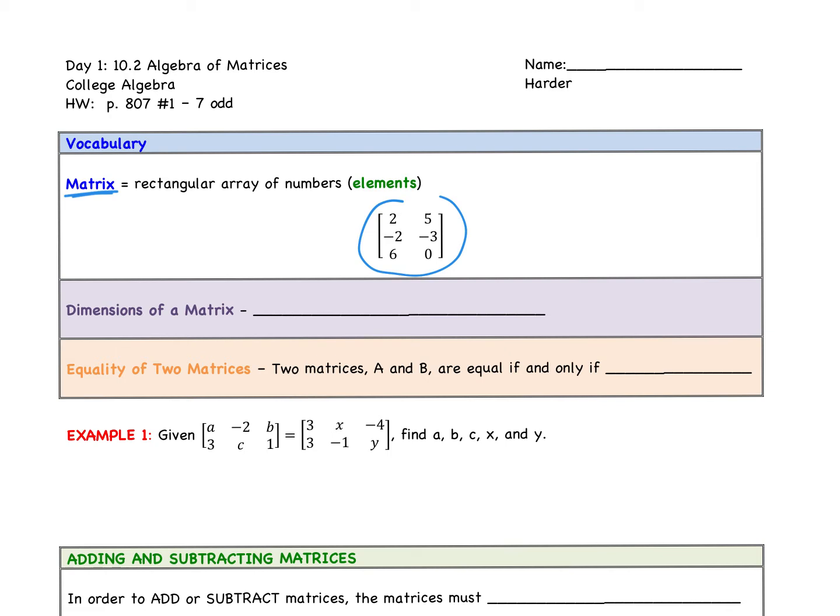Oftentimes, we describe a matrix with its dimensions. The dimensions of a matrix is the number of rows by the number of columns. So that matrix that you see above has three rows. So we say that this is three by two columns. So three by two. Those are the dimensions of that matrix. That is the first thing you have to be able to do in your homework is write the dimensions.